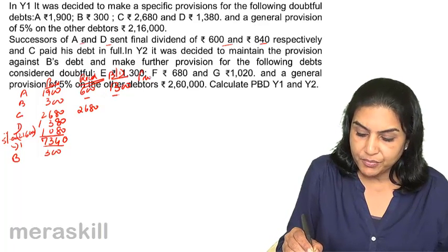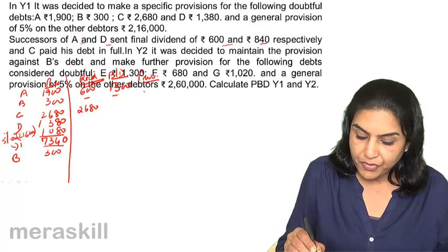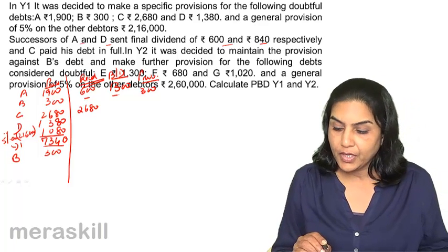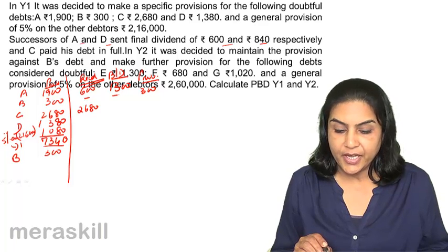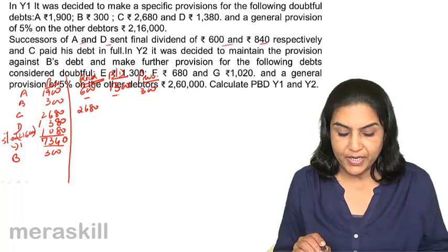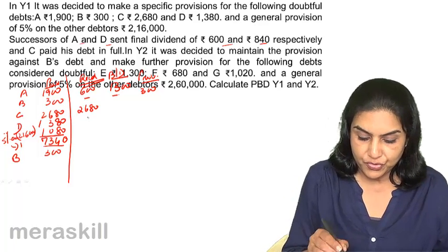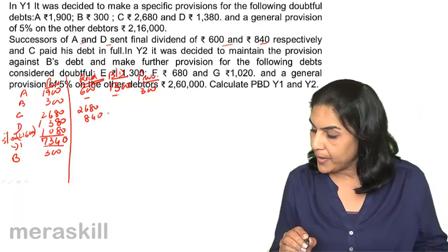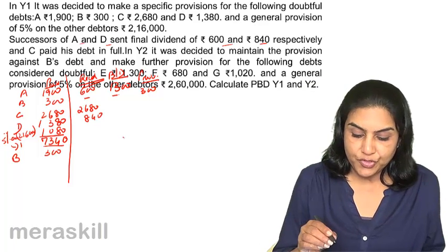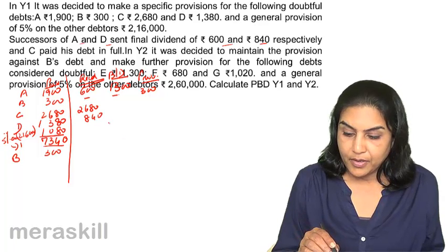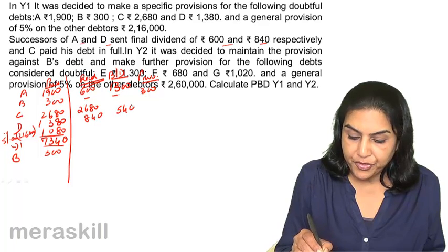For D, the amount received is 840, and the amount due was 1,380, so 540 is written off as bad debts. Total bad debts from A and D combined come to 1,840.